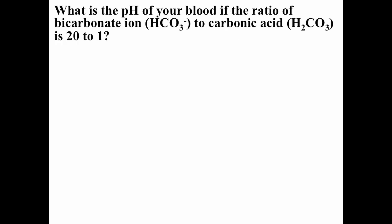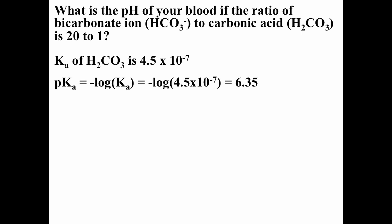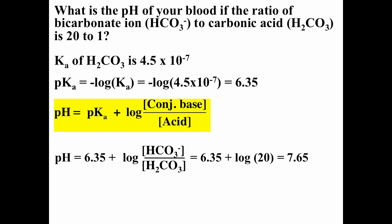A question you might see: what is the pH of your blood if the ratio of bicarbonate ion to carbonic acid is 20 to 1? The Ka of carbonic acid is 4.5 × 10⁻⁷, so pKa = −log(4.5 × 10⁻⁷) = 6.35. In the Henderson-Hasselbalch equation, the absolute values of the concentrations do not matter — it's the ratio of base to acid that counts. With a ratio of 20:1, pH = 6.35 + log(20) = 7.65.